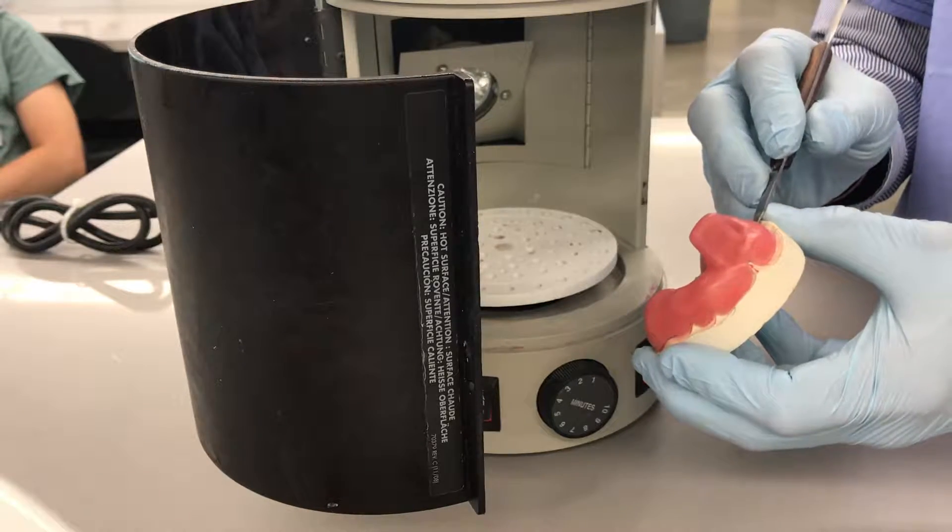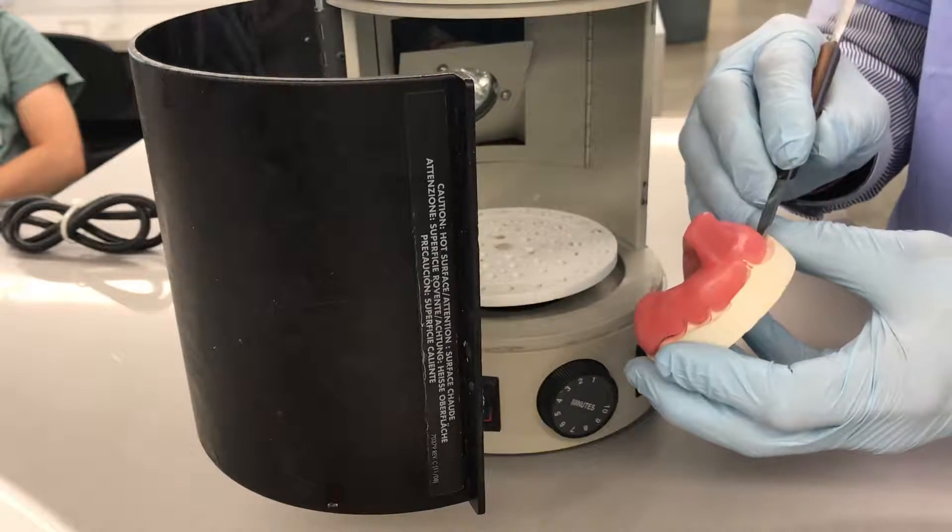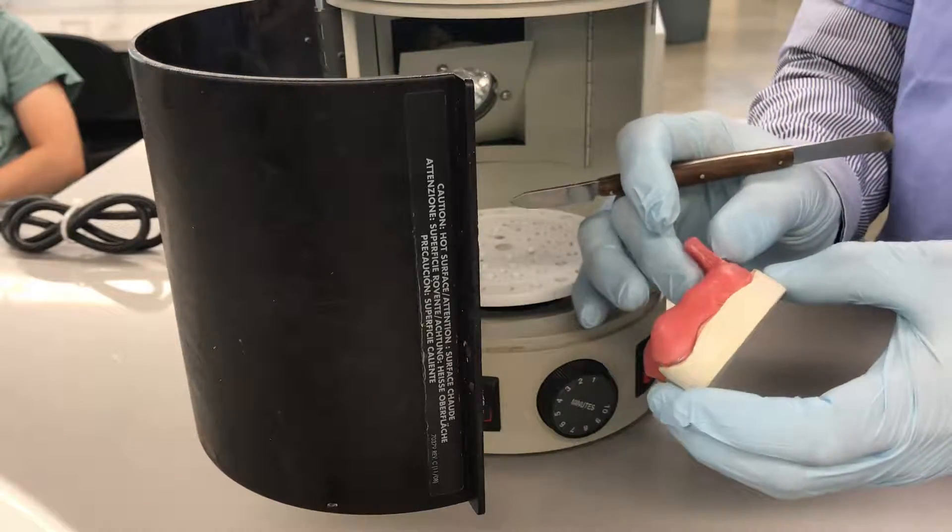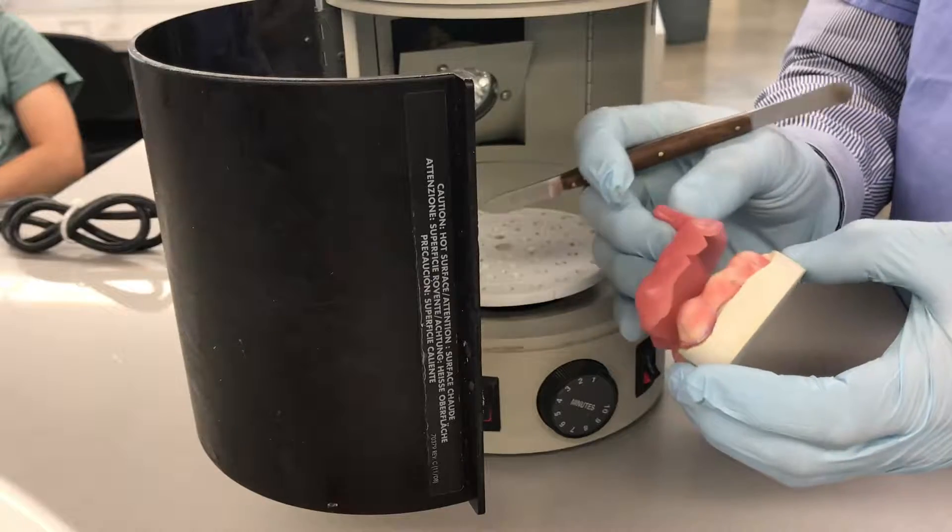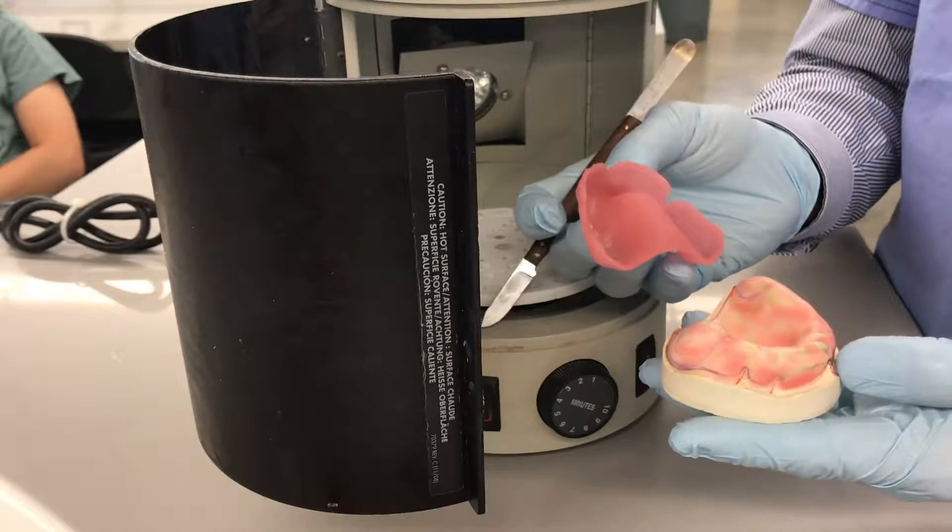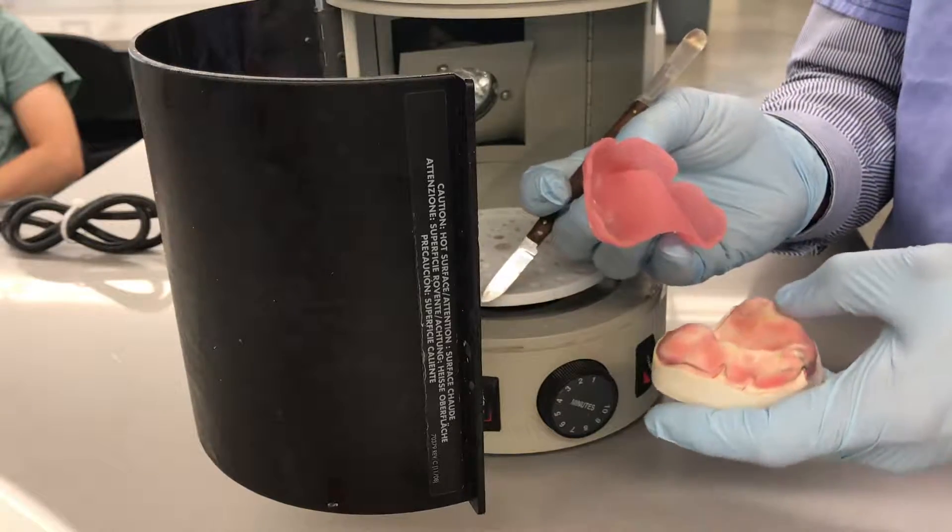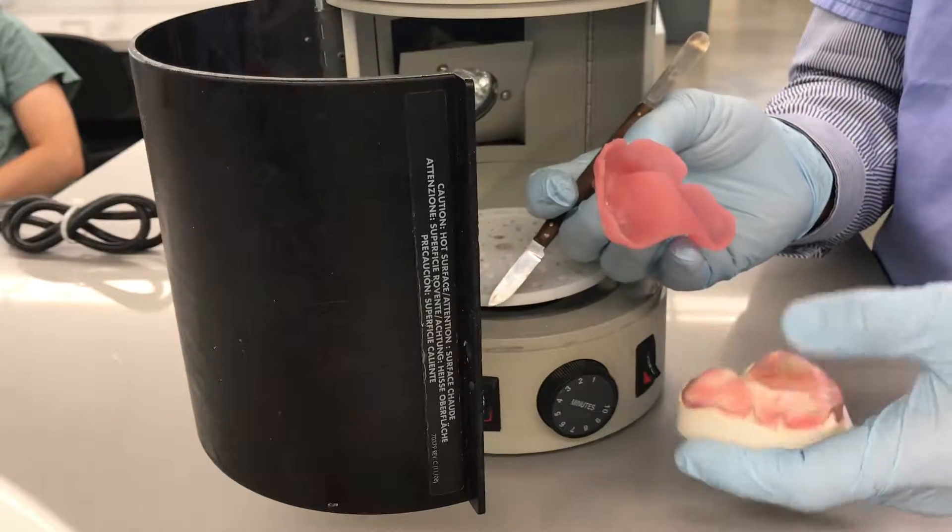I'm going to pry this off the model. If you block this out properly, you shouldn't have any undercuts. It should come off rather easily, very clean, because I took care in smoothing out the wax that I used for my block out.